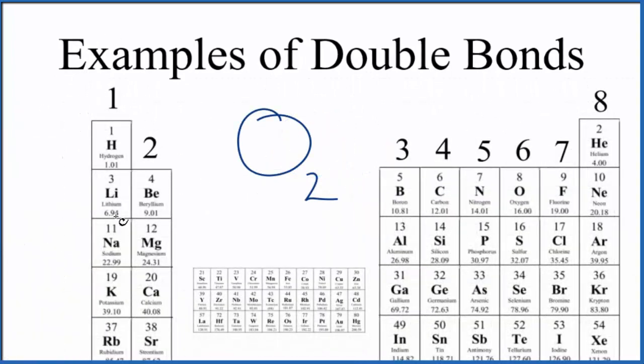And the periodic table here, we have group one with one valence electron. Group two has two. Skip the transition metals, they're a bit complicated. Group 13 has three, all the way up to oxygen in group 16. Oxygen has six valence electrons.